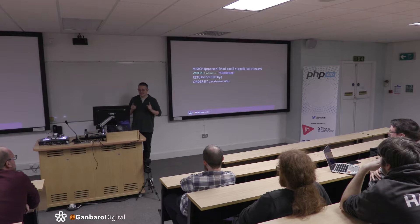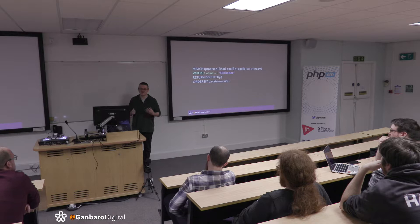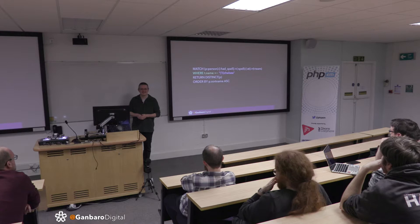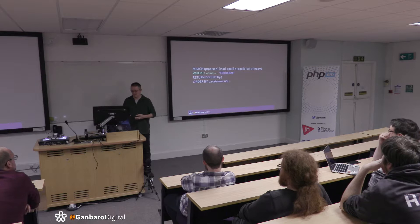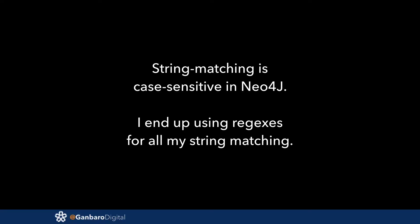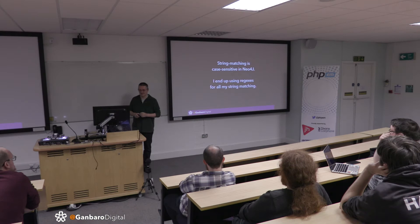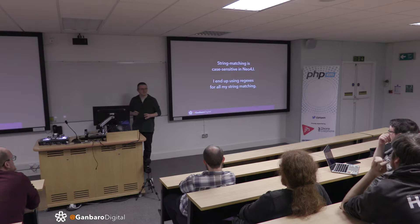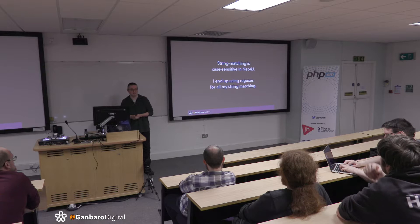Neo4j is built on Java, and it's not using industry-standard PCRE regular expressions — it's using whatever ships with the JVM. So if you want to do complex regexes you've got to learn the Java syntax for it, and there's a page on Neo4j's docs about that. I'm in the habit of always writing string matching as a regex. Performance hasn't been an issue — it's nowhere near as fast as SQL, but it's fast enough, and we're not throwing crazy money at this to run it.